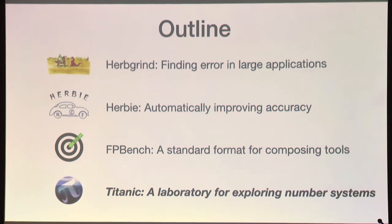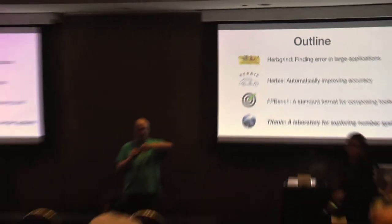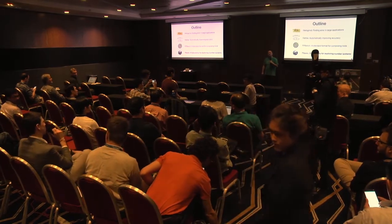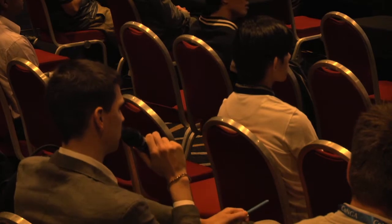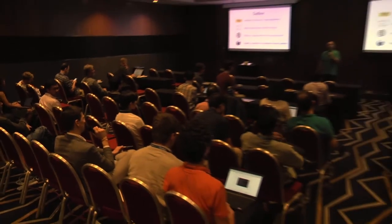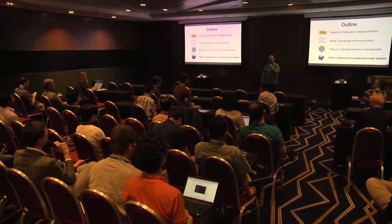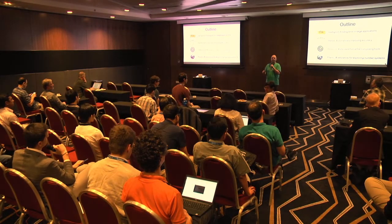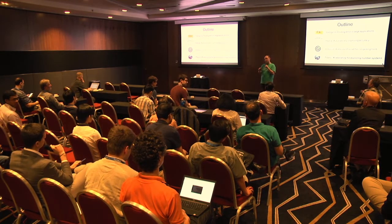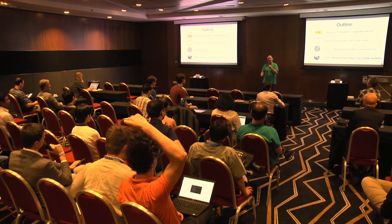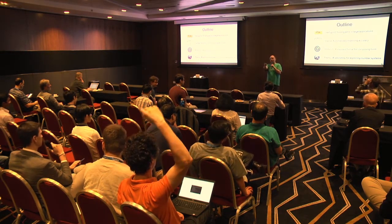Any questions about Herbie or FPBench? One question about adding a variable precision type — a new data format with different memory format like posit or others. We haven't thought about non-fixed formats carefully so the spec doesn't cover that yet, but we would be very interested and don't think there's any fundamental reason we couldn't do it. We would love to chat about adding that. Another question about escaping the curse of dimensionality with many variables — sampling works pretty well up to five or six variables, which was quite surprising to us.